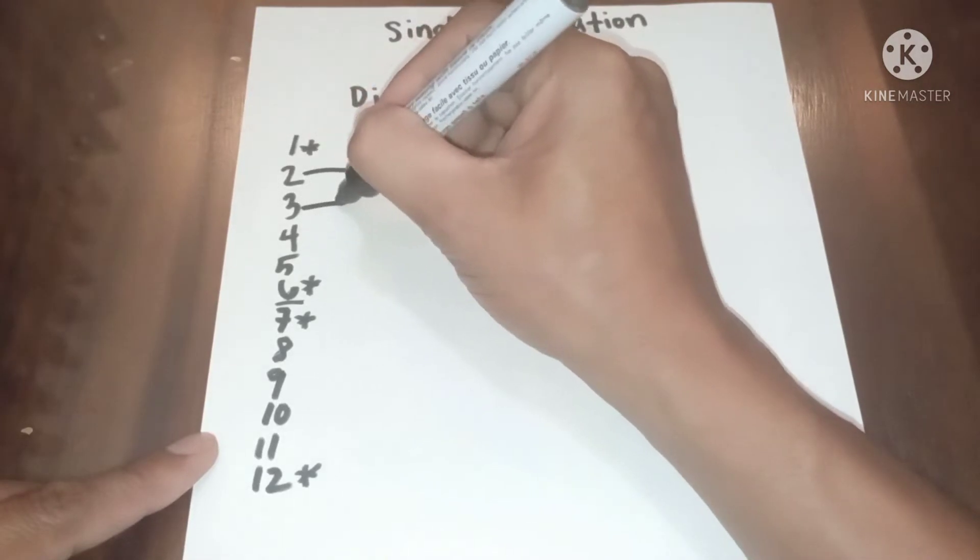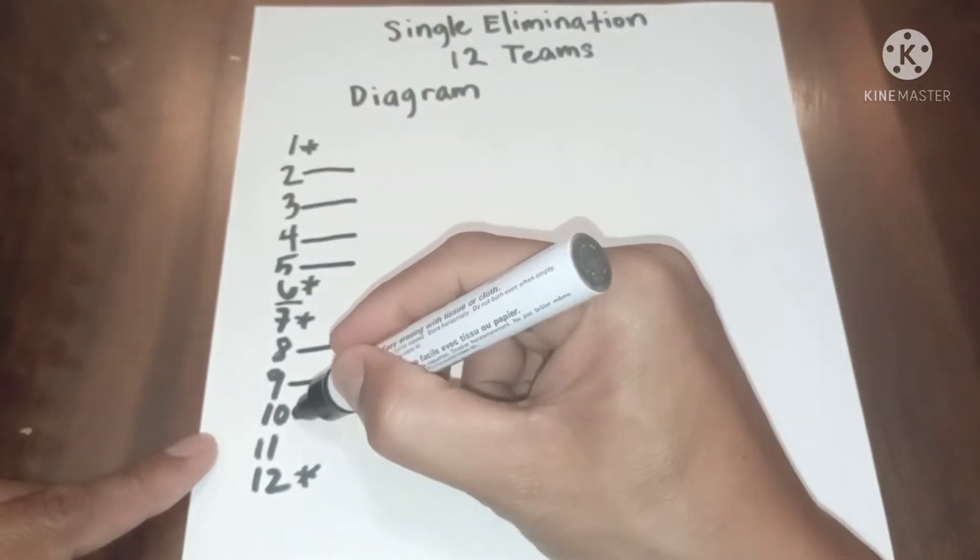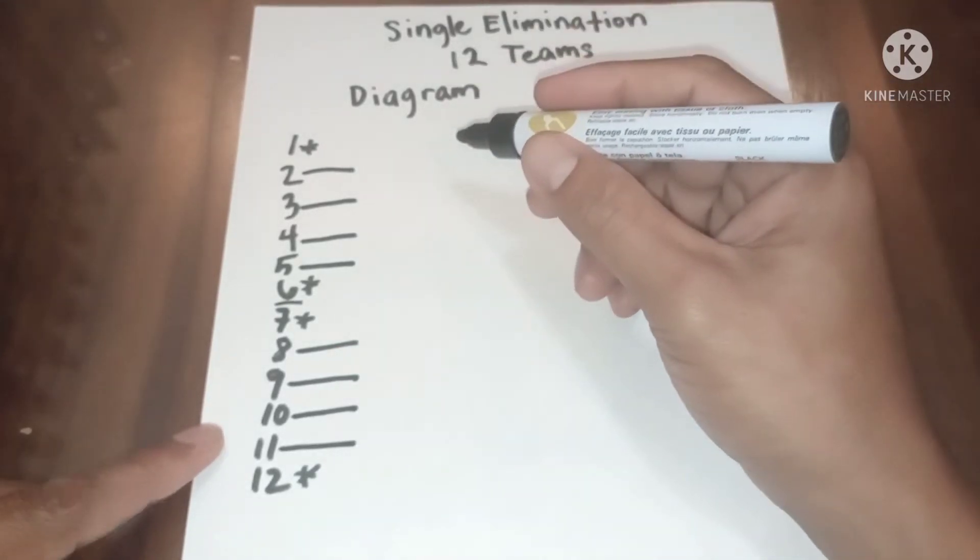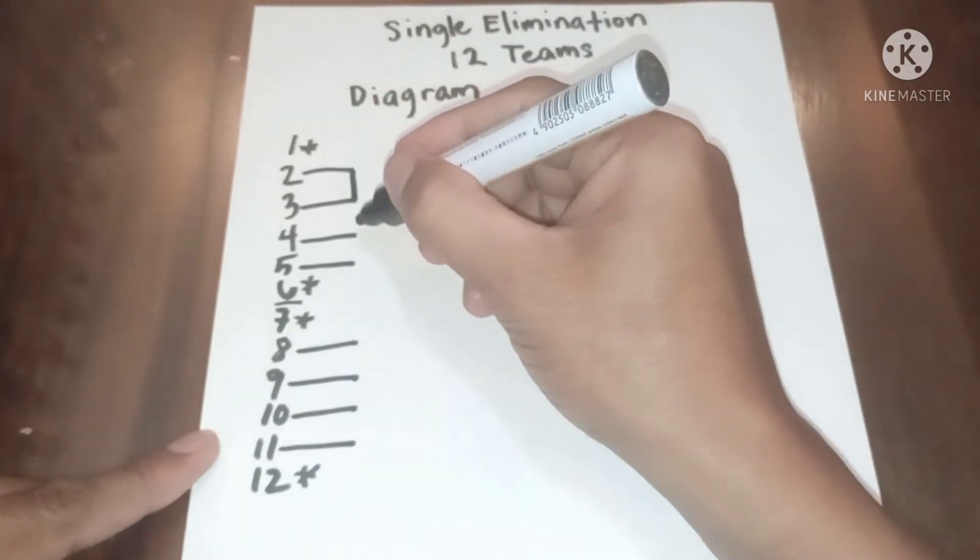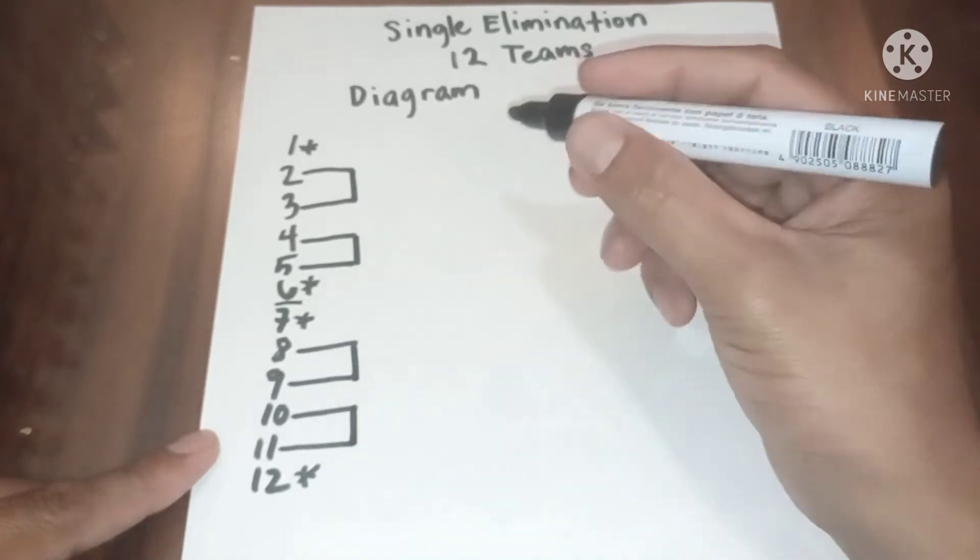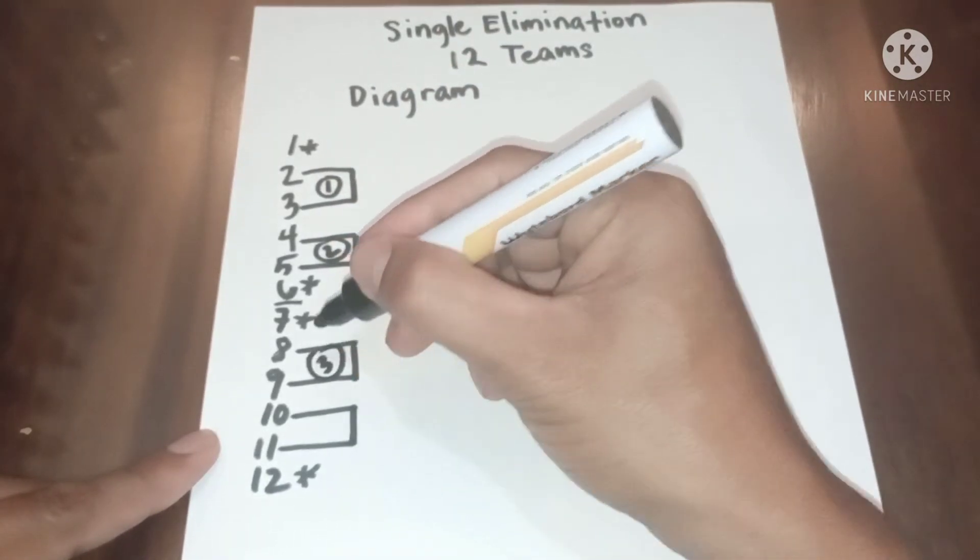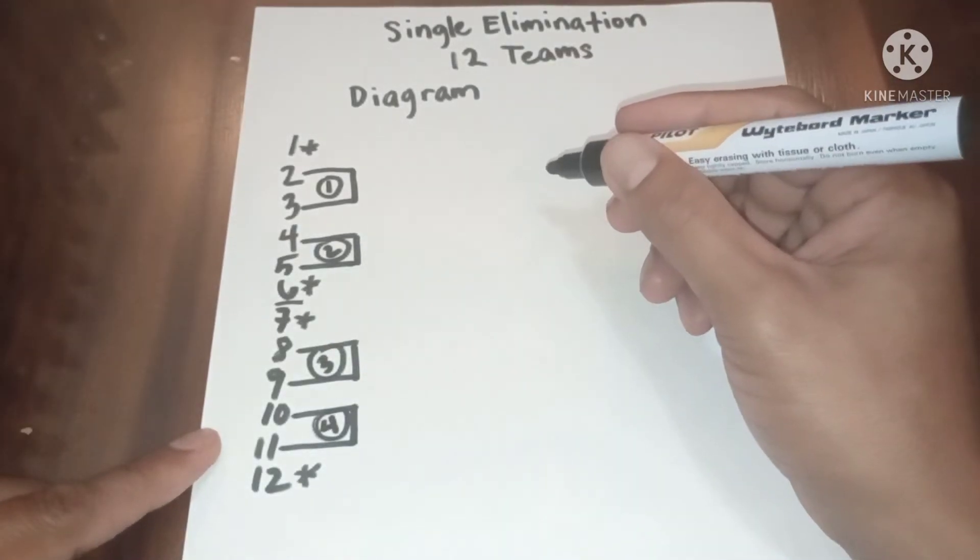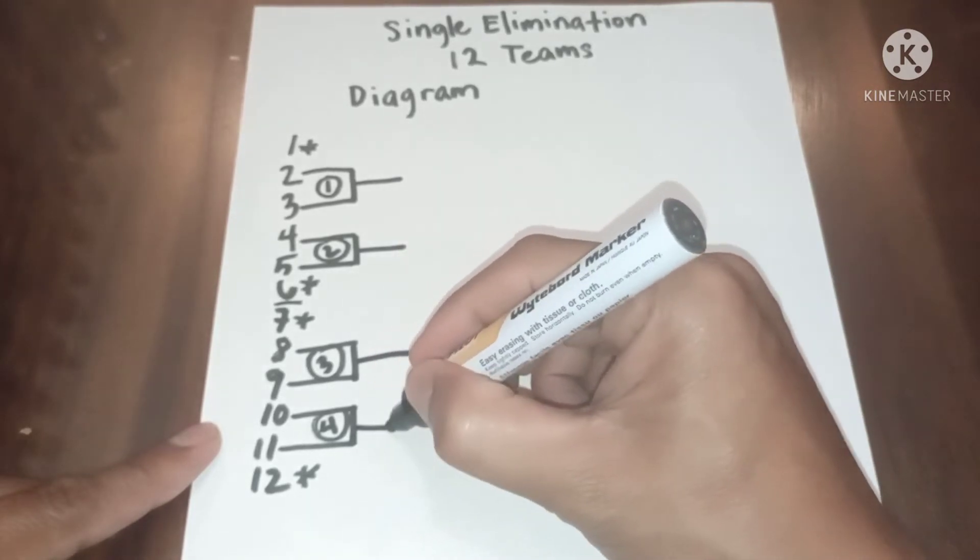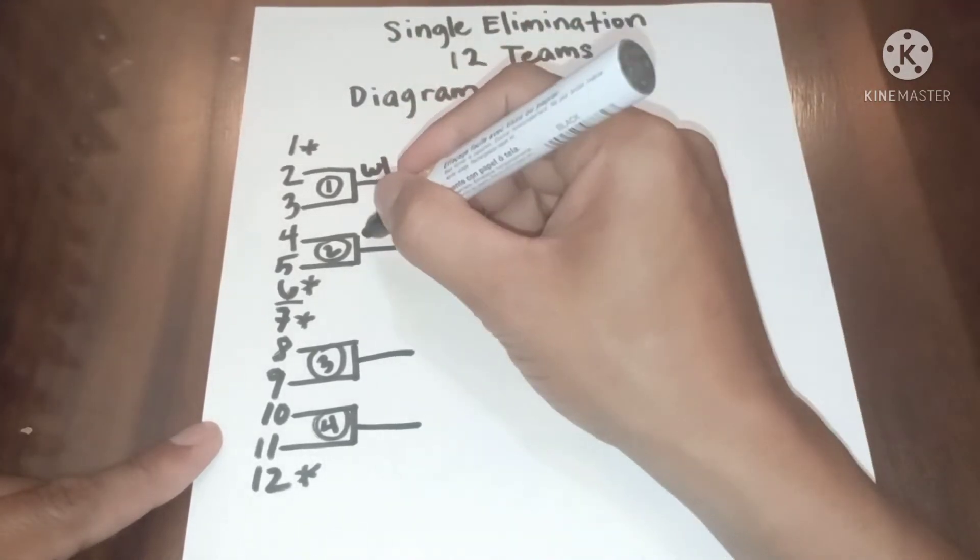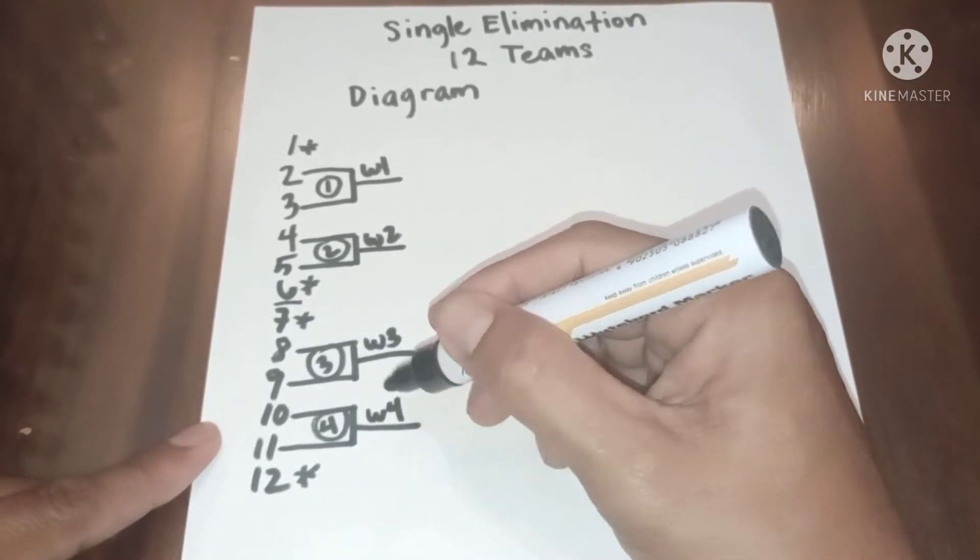We have 2, 3, 4, 5, 8, 9, 10, 11, and then the game numbers: game 1, game 2, game 3, and game 4. Now let us have the result from the top: winner 1 from game 1, winner 2 from game 2, winner 3 from game 3, winner 4 from game 4.